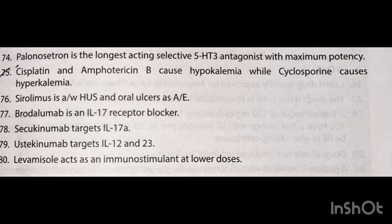Palonosetron is the longest-acting selective 5-HT3 antagonist with maximum potency. Cisplatin and amphotericin B cause hypokalemia, while cyclosporin causes hyperkalemia. Sirolimus is associated with HUS and oral ulcers as side effects. Brodalumab is an IL-17 receptor blocker. Secukinumab targets IL-17A. Ustekinumab targets IL-12 and IL-23. Levamisole acts as an immunostimulant at lower doses.